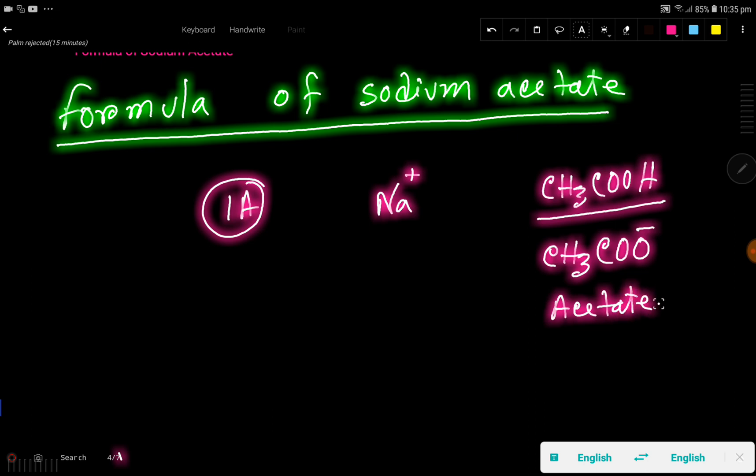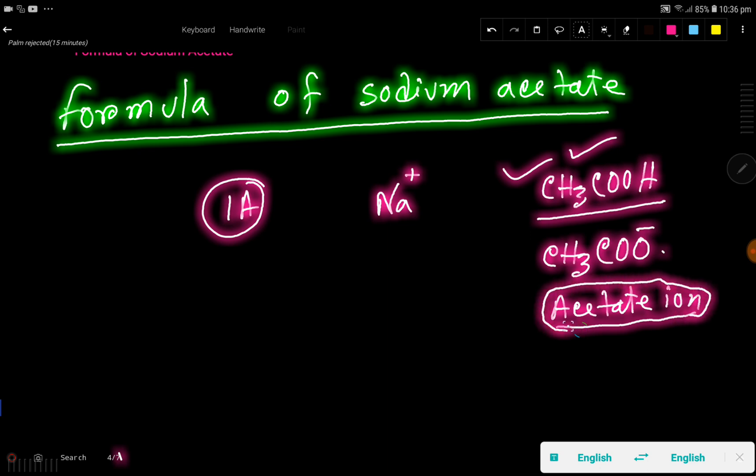Acetate - this is acetate ion. This is acetic acid and this is acetate. Actually, this is ethanoic acid according to IUPAC nomenclature, and this is ethanoate. However, we are going to call it acetate ion by adopting the common nomenclature.